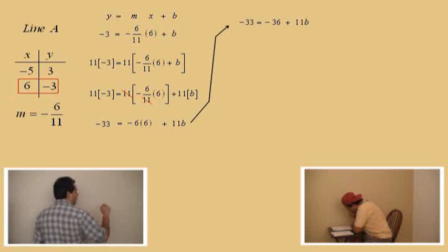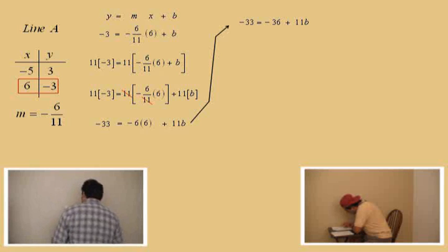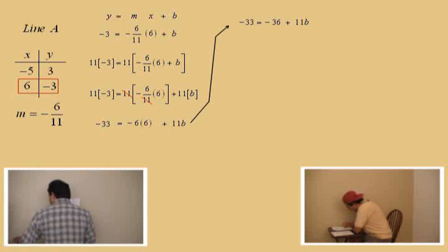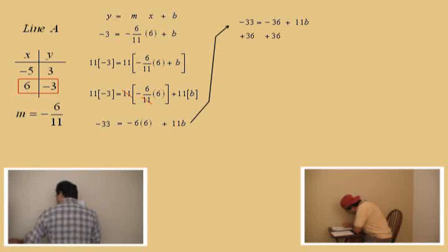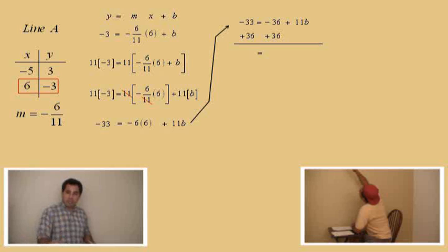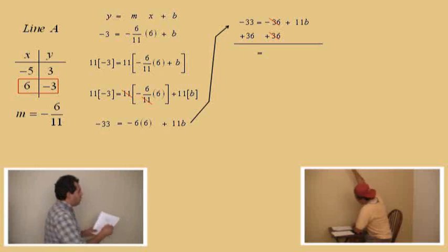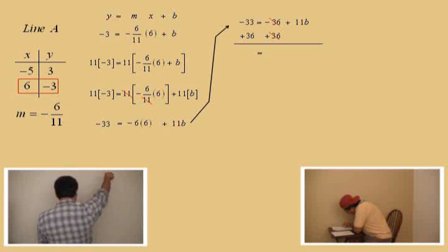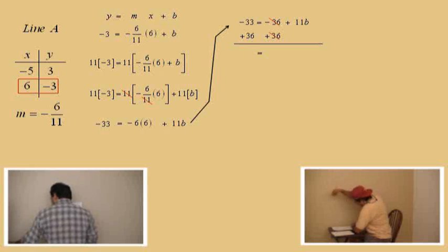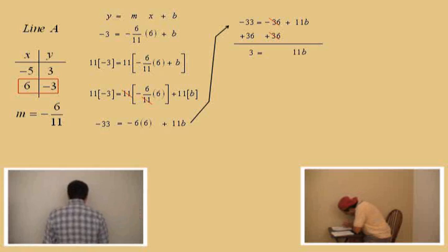We're trying to solve for B. We need that B value so we can write our equation out. What do I have to do now, Charlie? Add thirty-six to both sides. So we'll do that. Negative thirty-six plus thirty-six is zero, so we mark them off. What's left on the left-hand side, Charlie? Three. And the right-hand side? Eleven B. Very nice, Charlie.